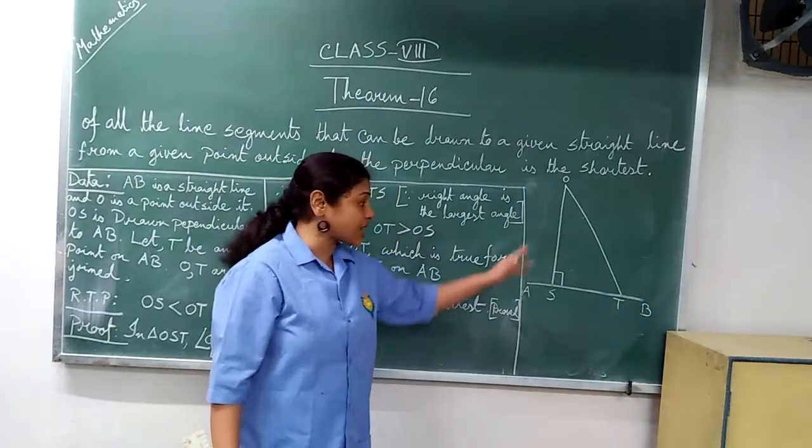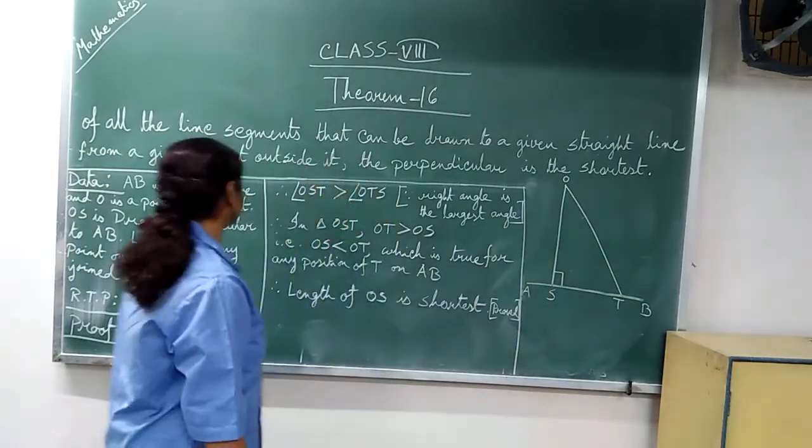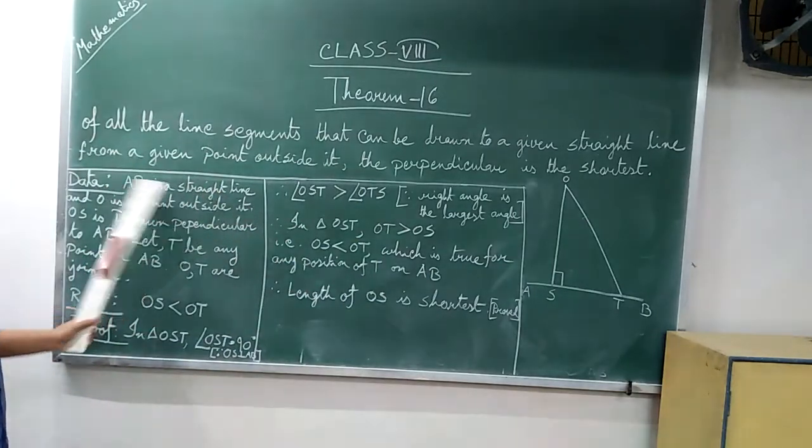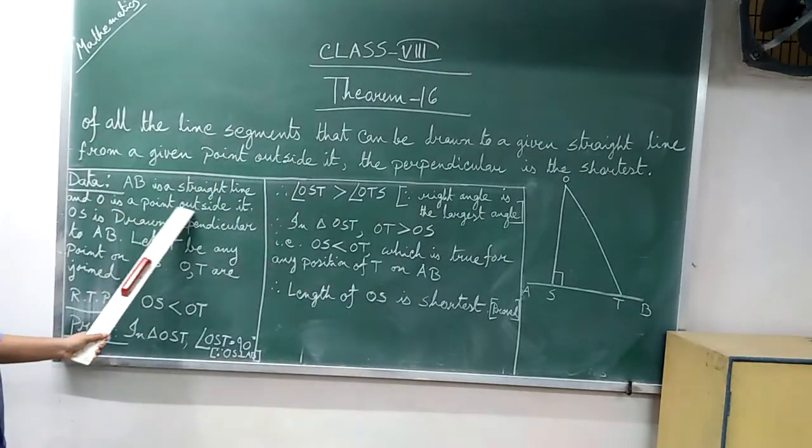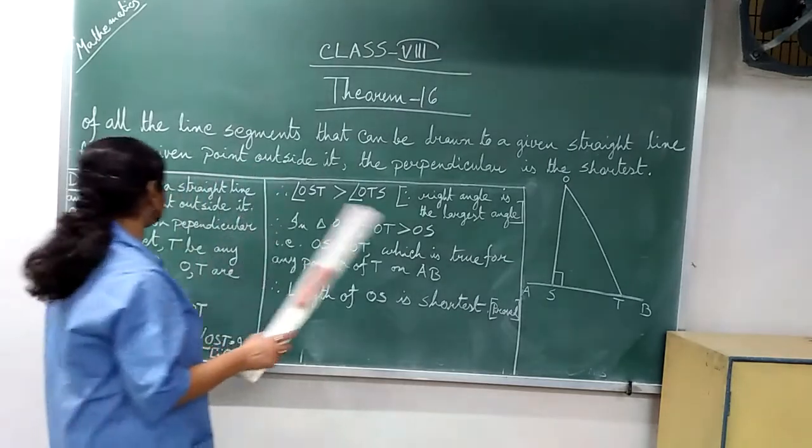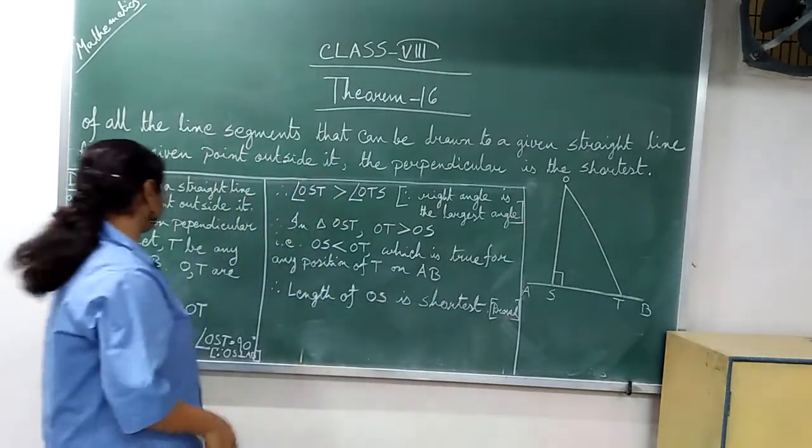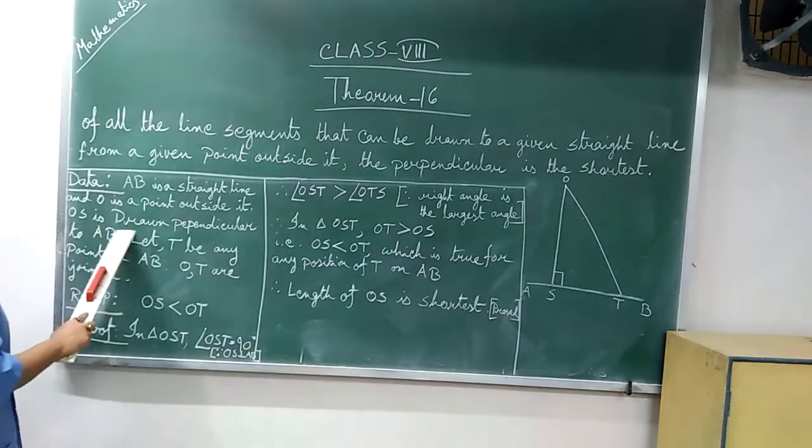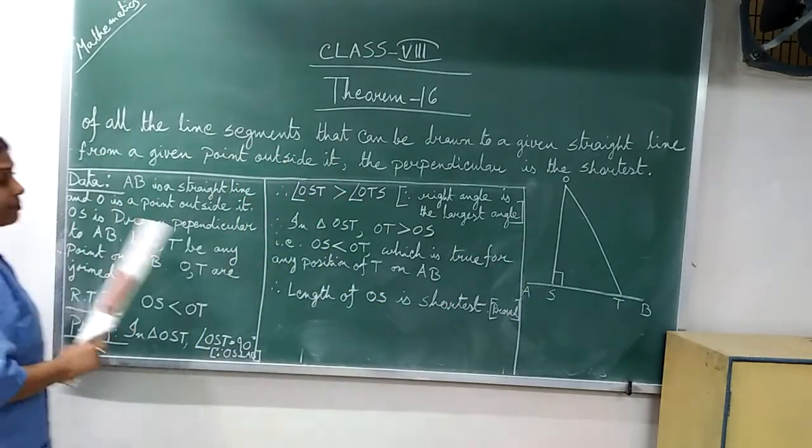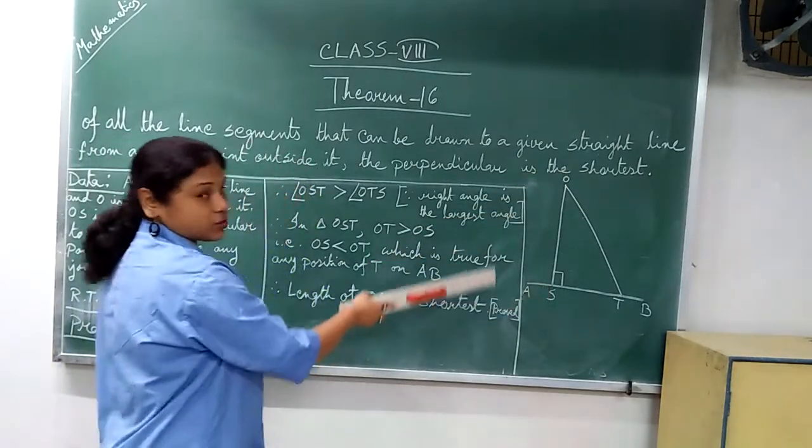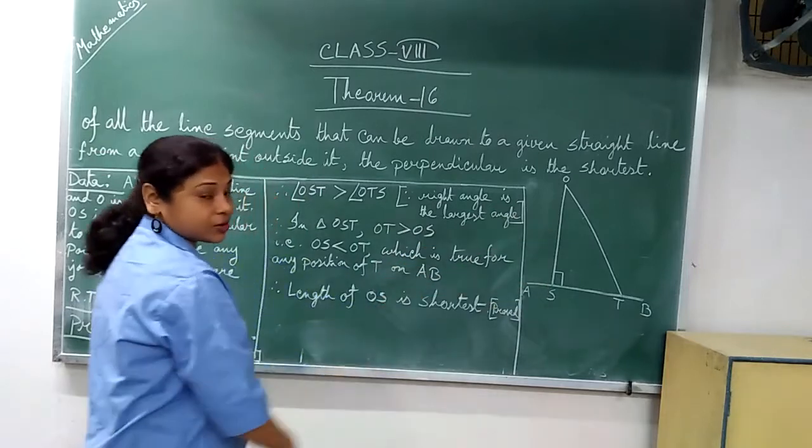This is the shortest distance that only we have to prove in this theorem. So data: AB is a straight line and O is a point outside. This is a diagram properly. AB is a straight line and O is a point outside. OS is drawn perpendicular to AB.